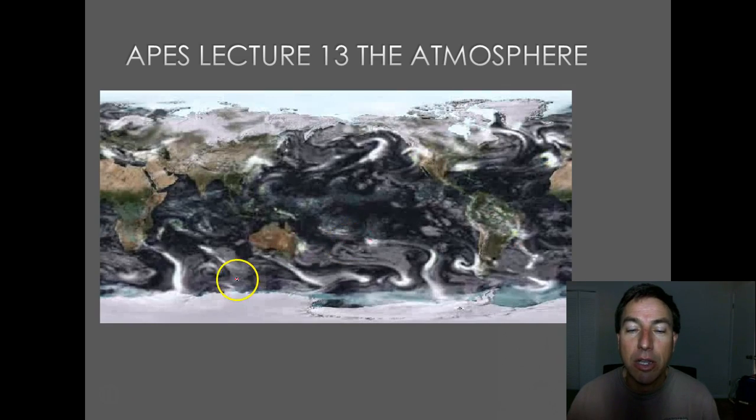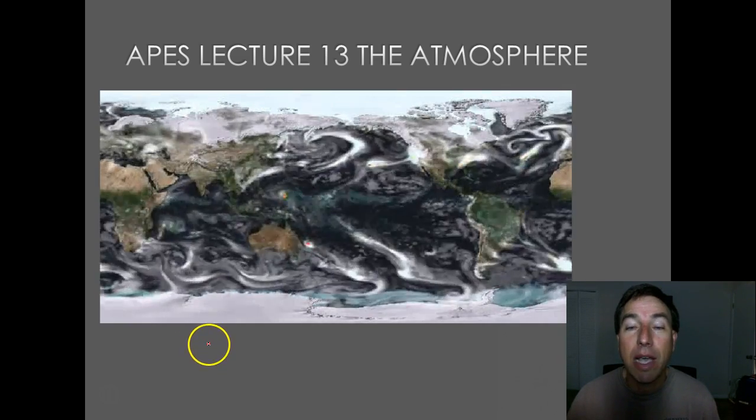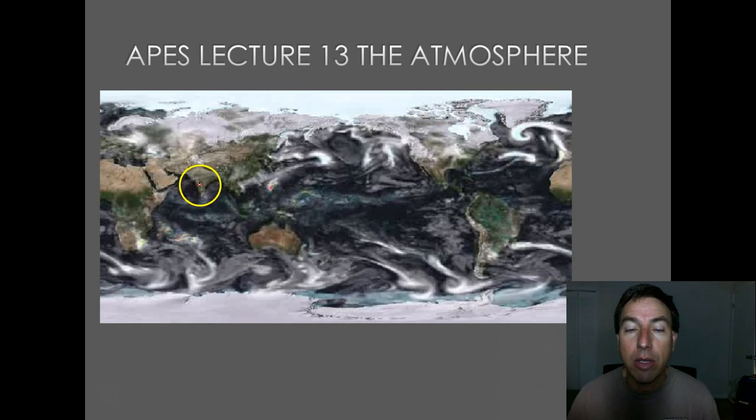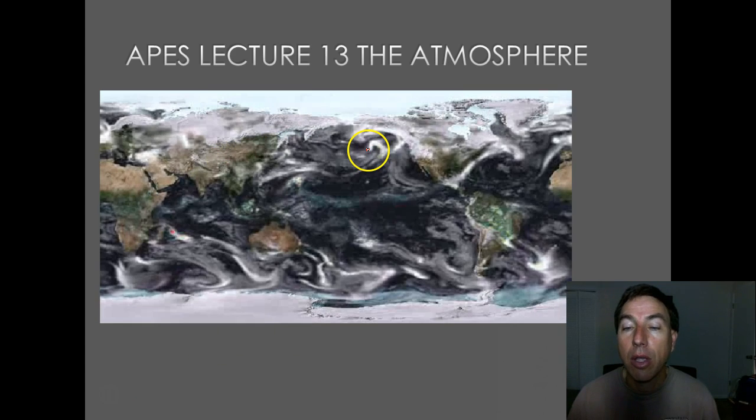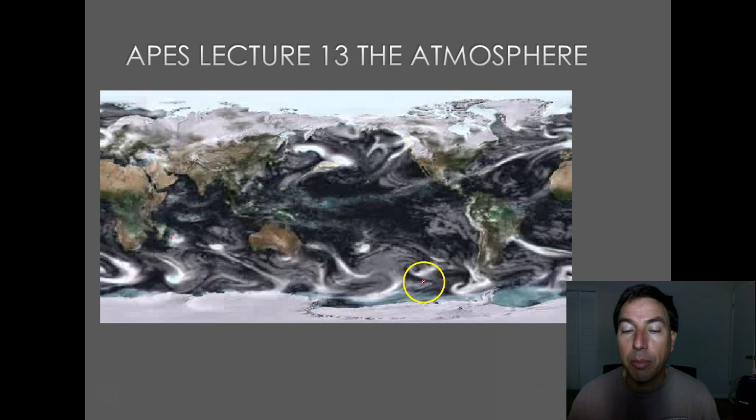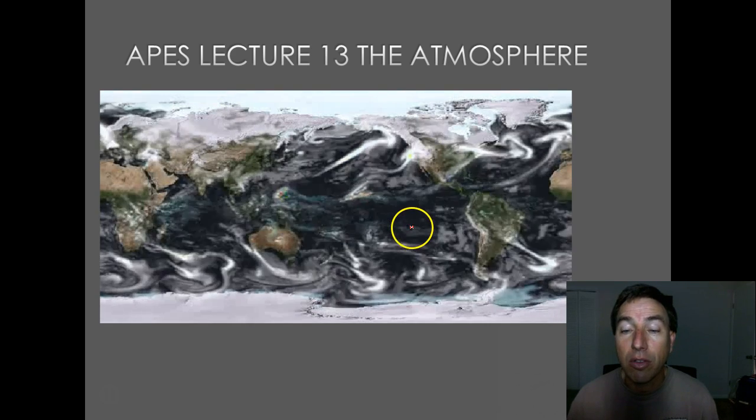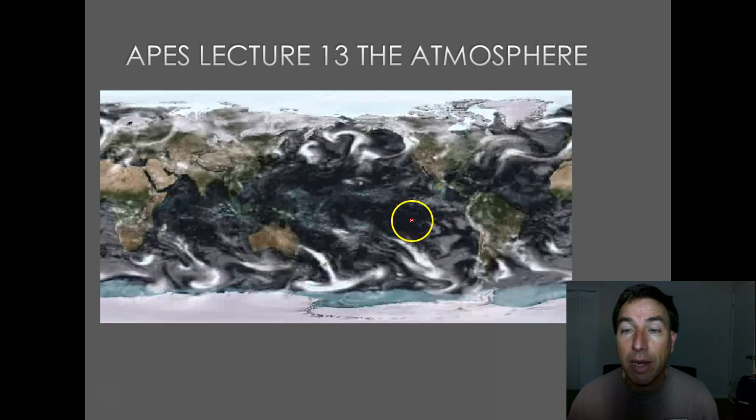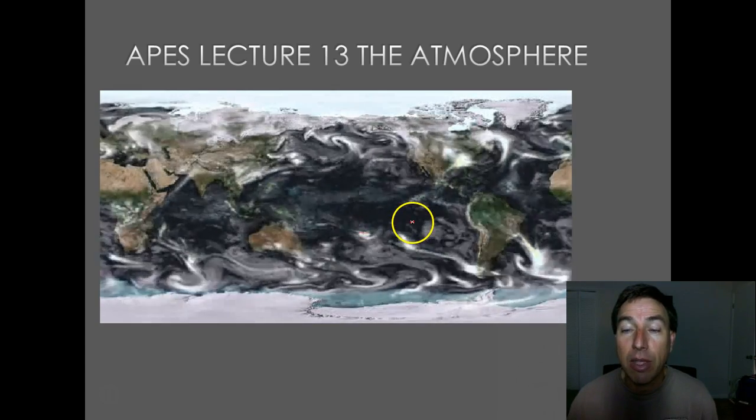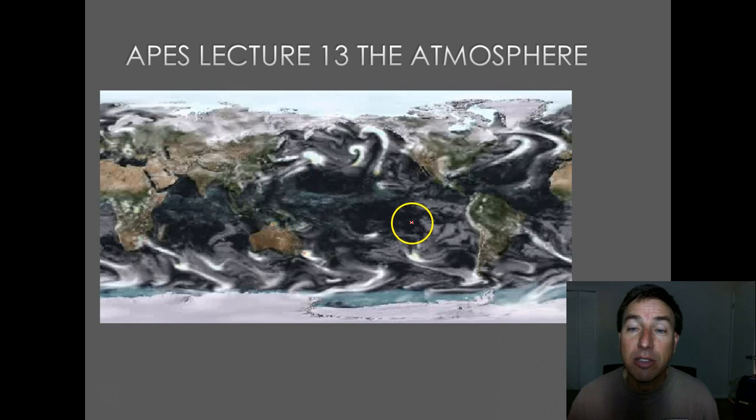As you can see in this animation, cloud patterns travel from one side of the planet to the other. We have cloud patterns coming off Asia, going all the way over to North America, and patterns going across from Australia over to South America. So the atmosphere is contiguous over the entire planet, and what happens in one part of the atmosphere affects the other parts of the globe.